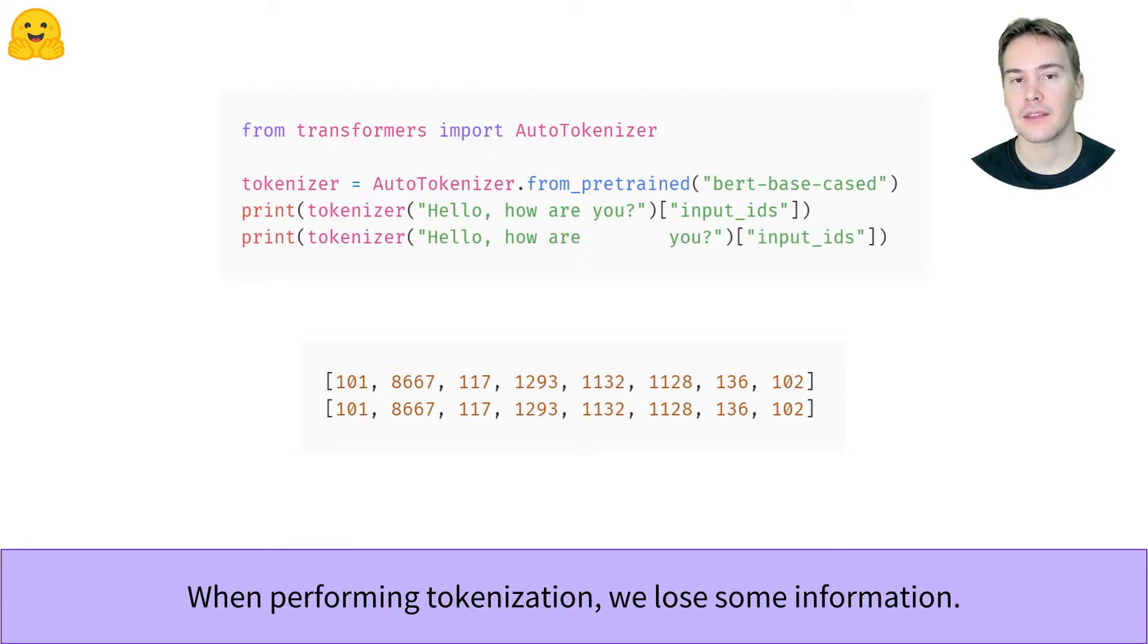Just having the input IDs is thus not enough if we want to match some tokens with a span of text, something we'll need to do when tackling question answering, for instance.